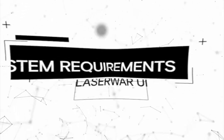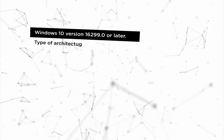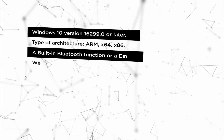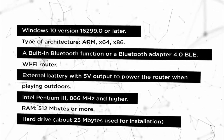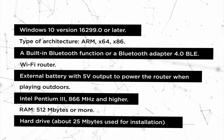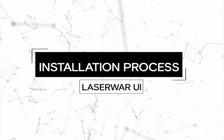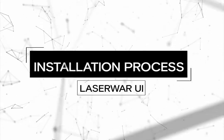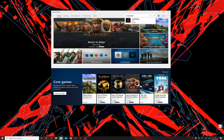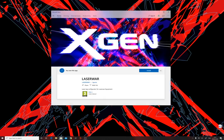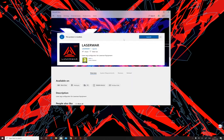What are the technical requirements of the software? You can see the technical requirements on your screen — please pause the video to learn more about the specs. How to install the application? You can get the application in the official Microsoft Store. Log in to the store, enter LaserWall in the search bar, and install the Configurator. The application is updated automatically.